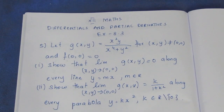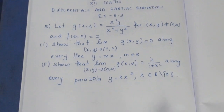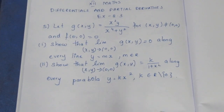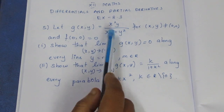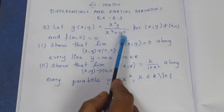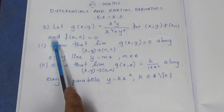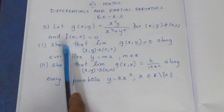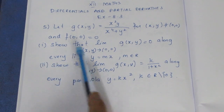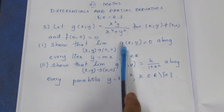Hello viewers, I am IT. In the 12th max, Differentials and Partial Derivatives, Exercise 8.3, 5th sum. Let g of x, y equal to x squared y divided by x to the power 4 plus y squared, for x, y not equal to (0,0), and g(0,0) equal to 0. Now show that: first subdivision — show that the limit of g(x,y) as (x,y) tends to (0,0).